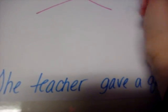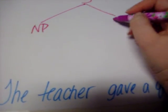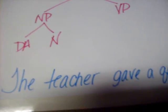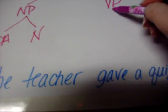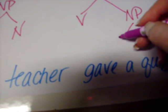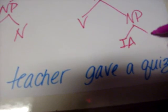In this sentence, we have 'the teacher gave a quiz.' So we have all three basic parts of a sentence. We have our noun phrase and our verb phrase. In the noun phrase, we have our definite article and our central noun. In the verb phrase, we have our verb. And also in the verb phrase, we have another noun phrase because we have our direct object with an indefinite article and the central noun. So, the teacher gave a quiz.